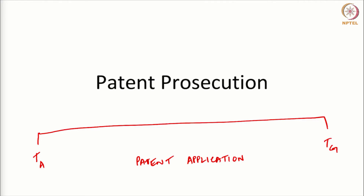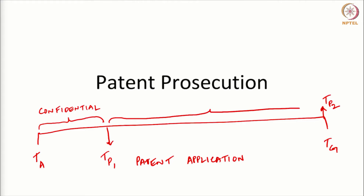There are many things that happen between these timelines. Within the time for the grant, there are publications that happen. First, there is TP1 — what we call the pre-grant publication. There is also TP2, a second publication that happens upon grant when the application gets published. The time period before the pre-grant publication is when the patent application remains dormant — what we call the confidential status. The patent application is kept confidential and is not published during this period.